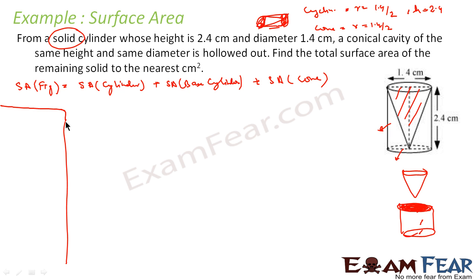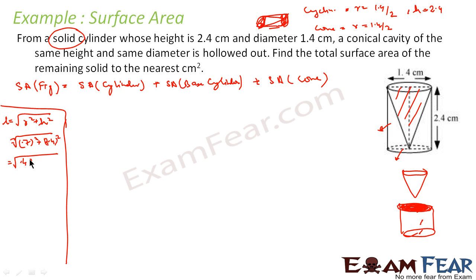We know that L is nothing but the square root of R squared plus H squared. In the right triangle, H is the height, R is the radius, and L is the slant height. So L = √(R² + H²) = √(0.7² + 2.4²) = √(0.49 + 5.76) = √6.25 = 2.5 centimeters. So L is 2.5 centimeters.